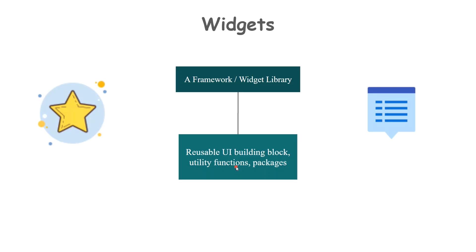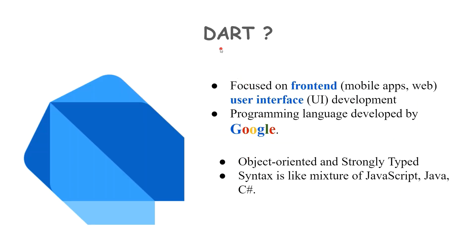Now let us move forward and learn what Dart is. As we already saw, Flutter uses a programming language called Dart. Dart is a programming language focused on building front-end user interfaces. It is not limited to mobile applications — that's just what Flutter uses it for — but Dart is independent of Flutter and can also be used to build web applications. It was developed by Google, just like Flutter, though they are independent teams. Dart is object-oriented and strongly typed, and its syntax is like a mixture of JavaScript, Java, and C#.